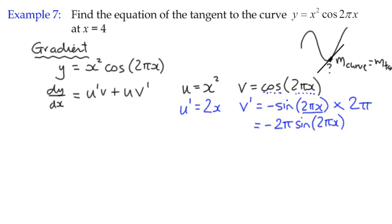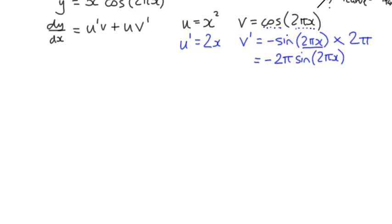So I can simplify that derivative by saying that it's negative 2π sine 2πx. So what do we do to put the derivative together?